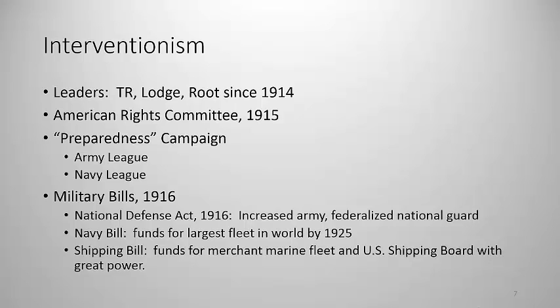The preparedness campaign also resulted in the Navy Bill of 1916, which funded a large Navy. In its first year, the bill called for four battleships, four battlecruisers, 20 destroyers, 30 submarines, and various smaller ships to be built — a three-year bill. It also resulted in the Shipping Bill of 1916, which created a government-funded merchant marine and the U.S. Shipping Board, giving the Board exceptional power in the event of war.